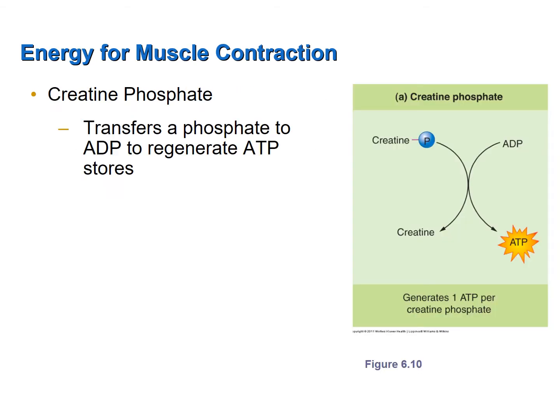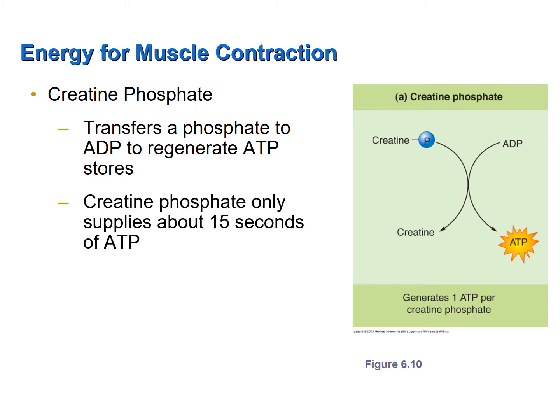After ATP stores are depleted by the skeletal muscle fibers, creatine phosphate in the cytoplasm or sarcoplasm of the skeletal muscle fibers can provide a source of ATP. Creatine phosphate transfers a phosphate to ADP to regenerate ATP stores in the sarcoplasm. However, creatine phosphate only supplies about 15 seconds worth of ATP.